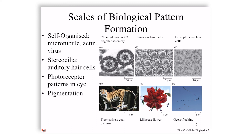Biological pattern formation has been seen at multiple scales. What we've talked about so far has mostly been focused on self-organized pattern formation — microtubule formation, actin formation. We also didn't speak much about virus capsid assembly and many other structures that can spontaneously form. Lipids were another example from last semester. But there are also higher-level structures that can form from these subunits or components, like cytoskeletal elements such as stereocilia, which are found in auditory hair cells, shown in figure B.